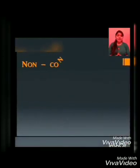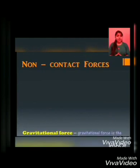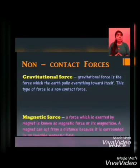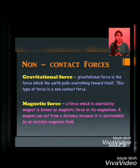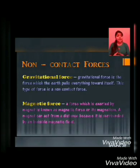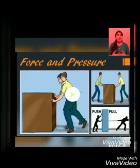Non-contact forces: The first example is gravitational force. Gravitational force is the force with which the earth pulls everything toward itself, and this type of force is called non-contact force. The second one is magnetic force. A force which is exerted by a magnet is known as magnetic force or magnetism. A magnet can act from a distance because it is surrounded by an invisible magnetic field.